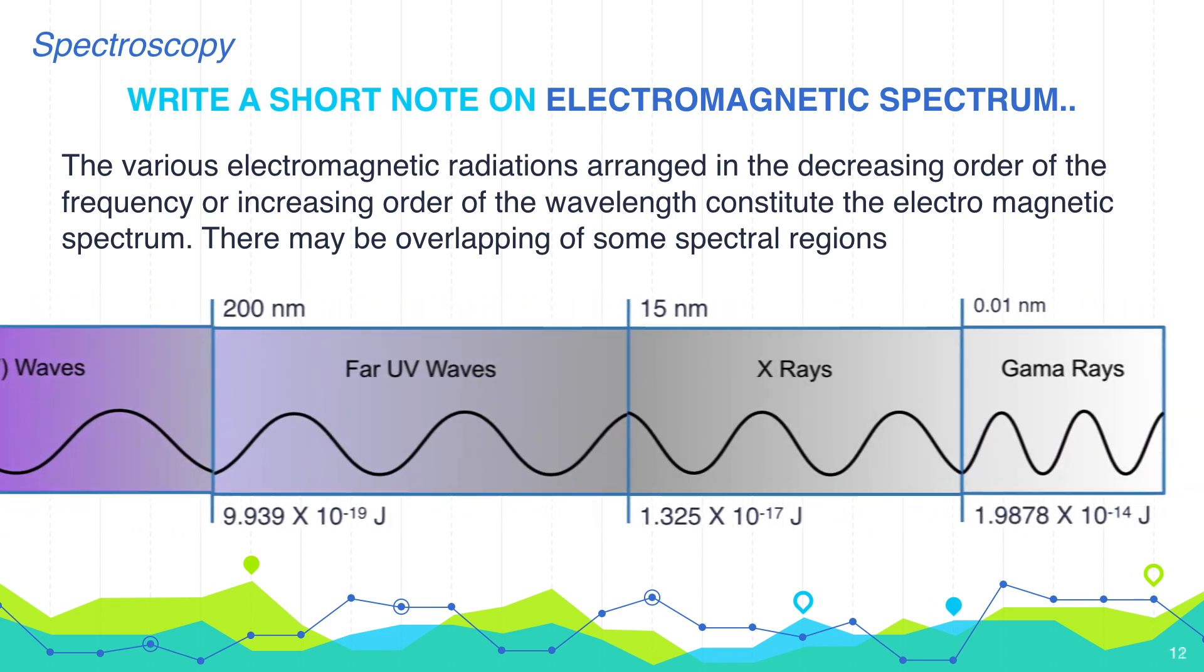From 200 nanometer, energy further increases and the range becomes far UV radiation. Far because it is far from the visible range. This range is having very high energy which can convert oxygen into ozone. This conversion of oxygen into ozone is the reaction happening in stratosphere of our atmosphere.